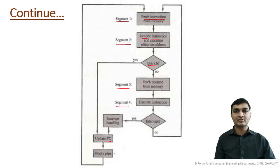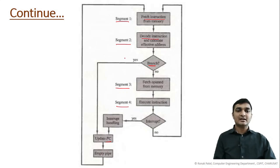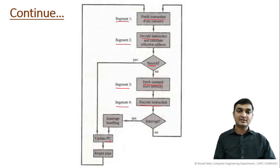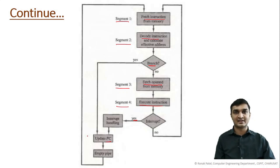If there is a branch, you need to update the program counter and empty the entire pipeline, because the instructions already loaded into the pipeline are no longer valid. If there is no branch and sequential execution continues, you fetch the operand and execute the instruction. After completing the instruction, it checks whether there is an interrupt. If there is an interrupt, interrupt handling takes place, the program counter is updated, and the pipeline is emptied to handle the interrupt.